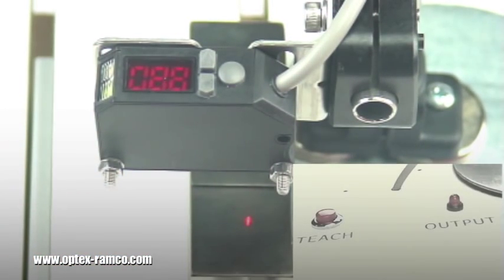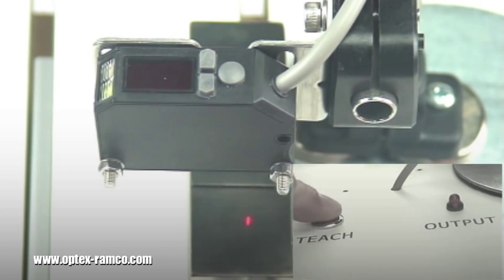To see the difference between 1 and 2 steps, I first have the sensor looking at the farthest object away from it. I press the teach button.